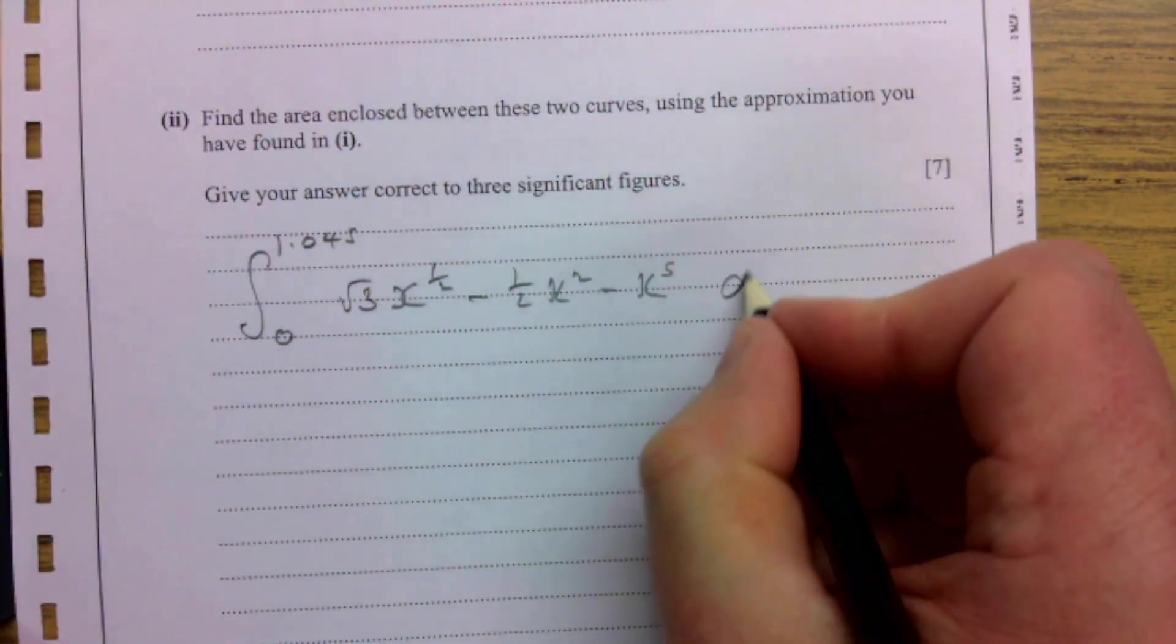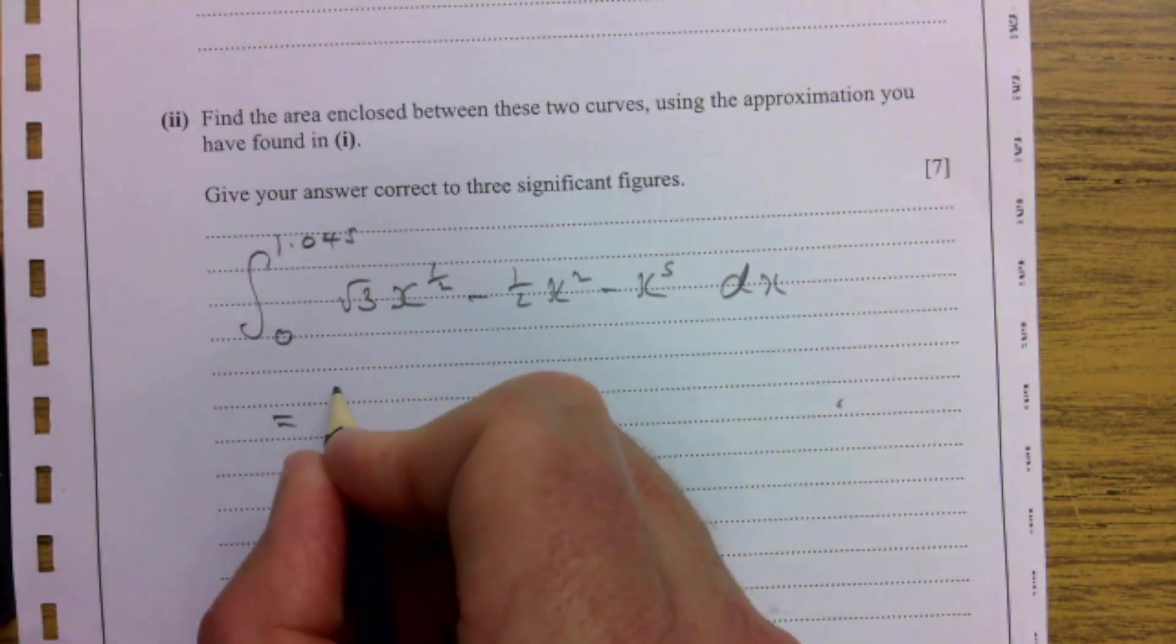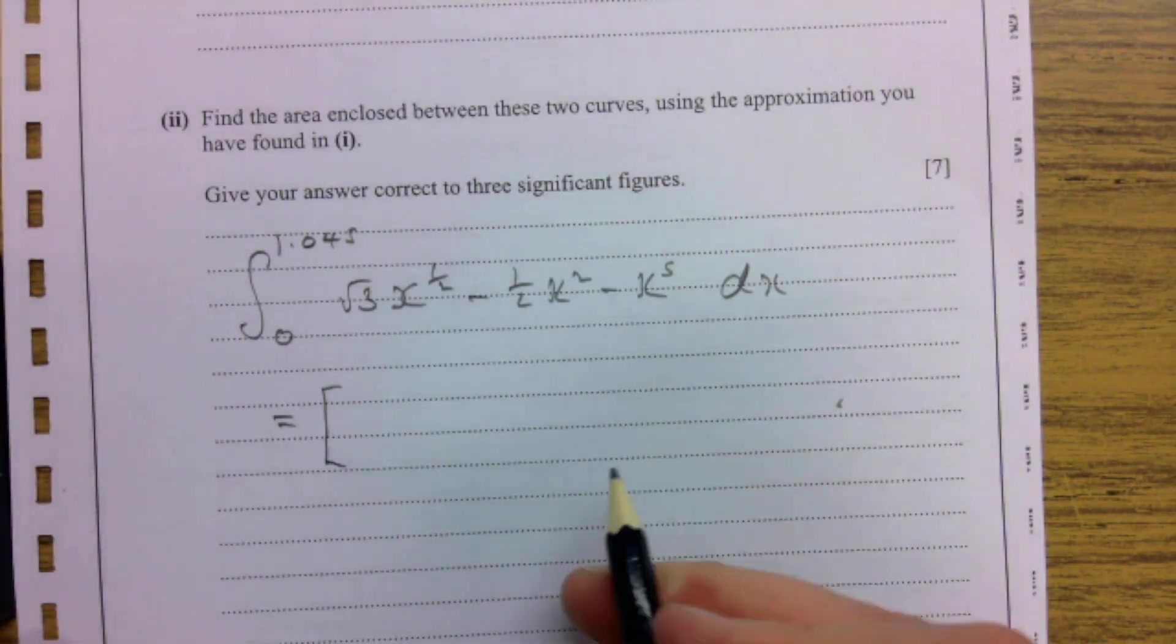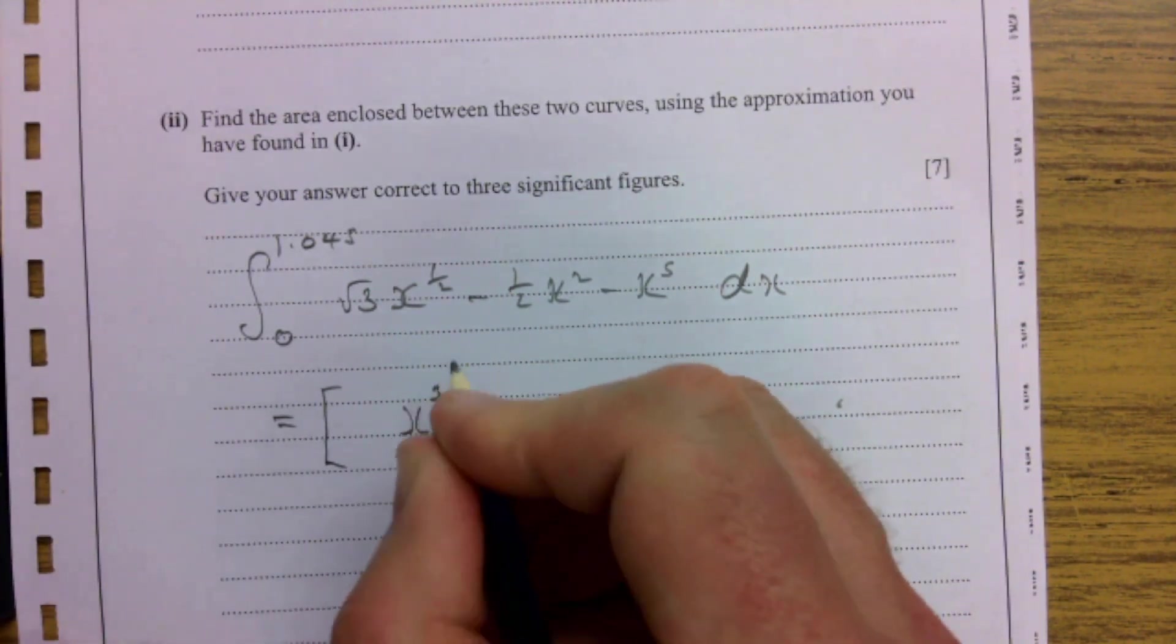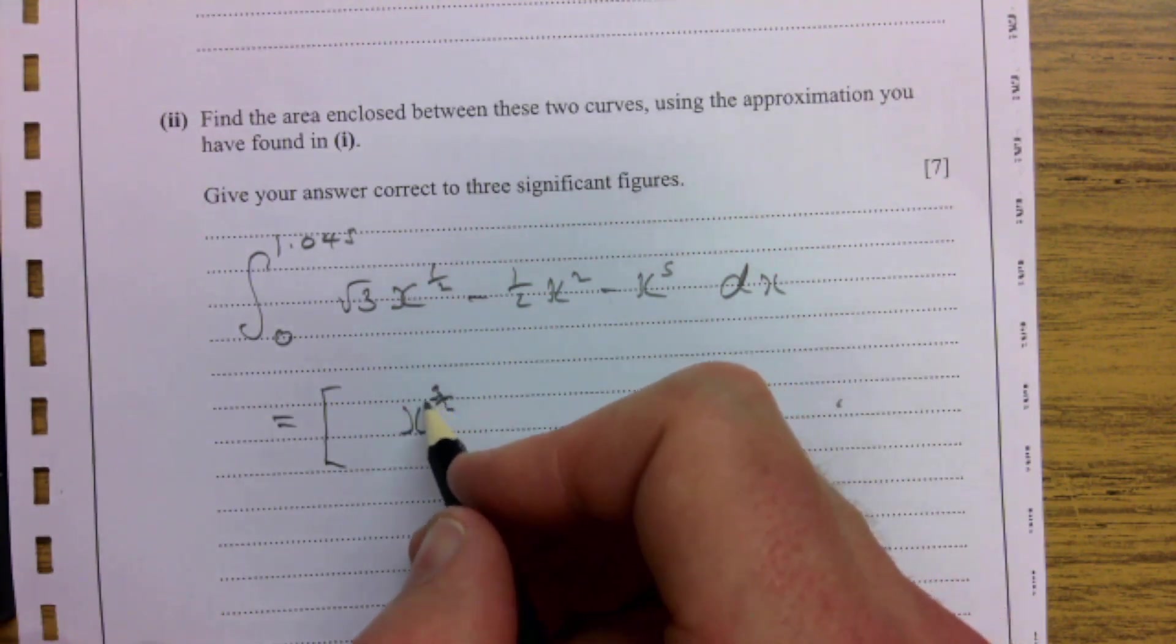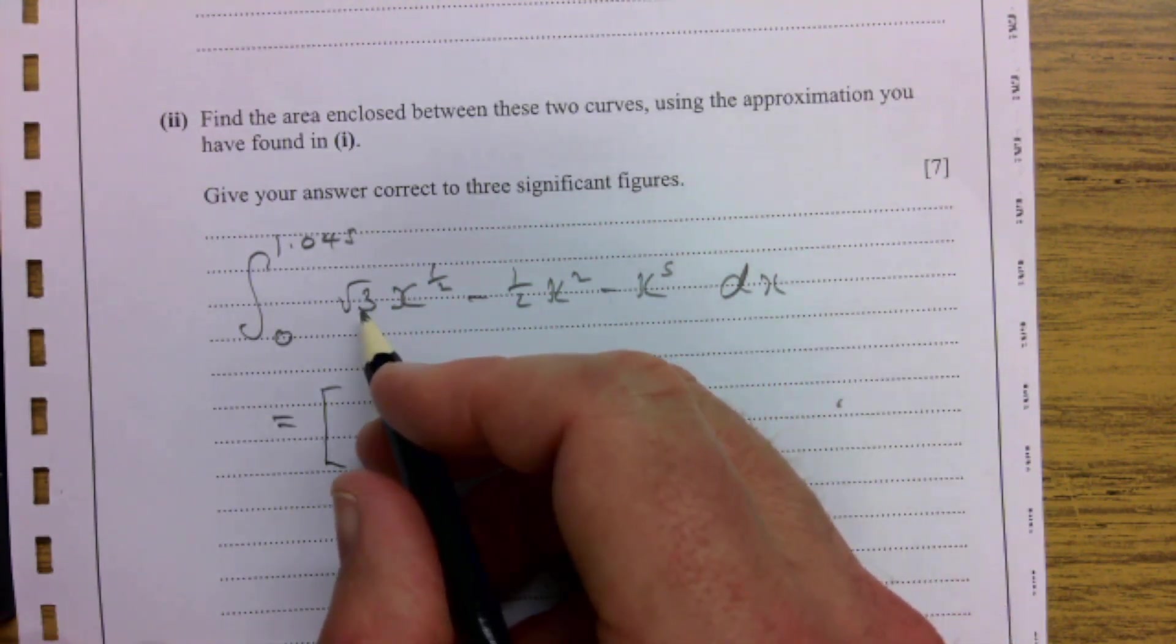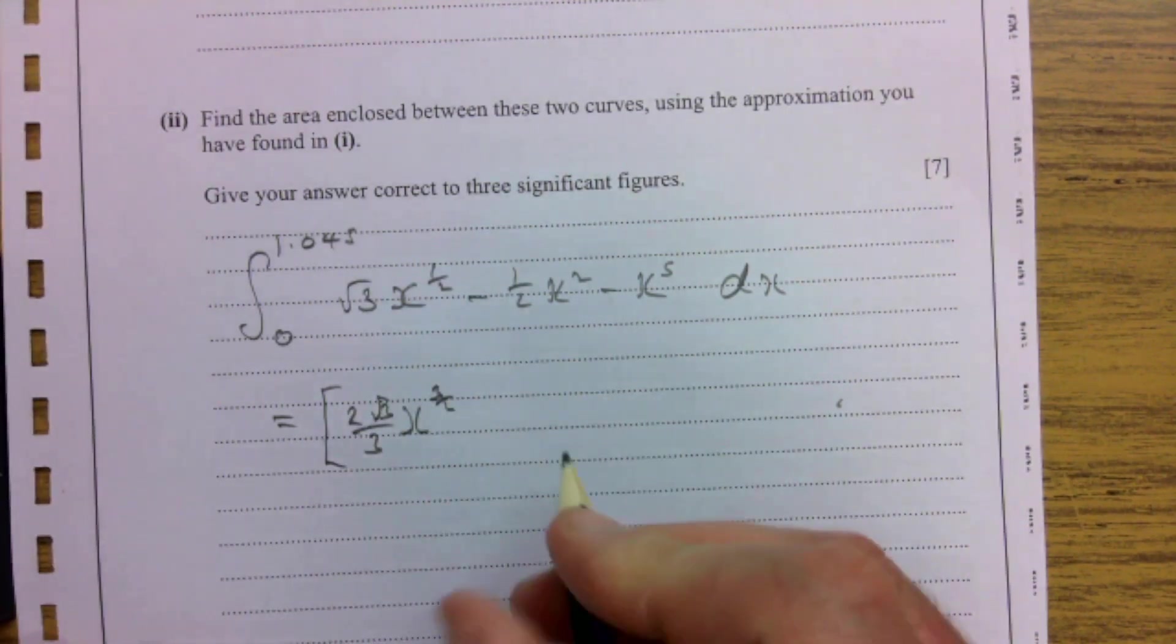So let's integrate that and see how we go. I'm adding 1 to the power, so it's x^(3/2). And I divide by 3/2, so that's multiplying by 2/3. So it gives me (2√3/3)x^(3/2).